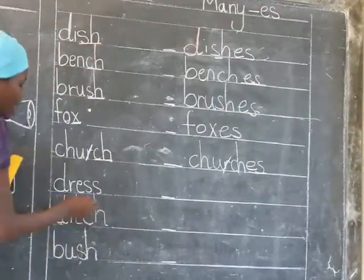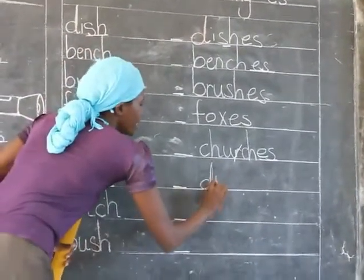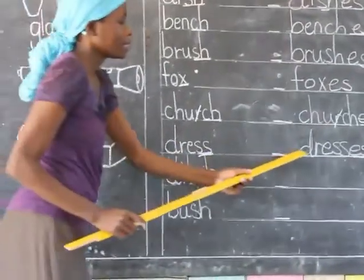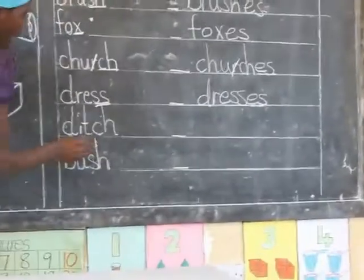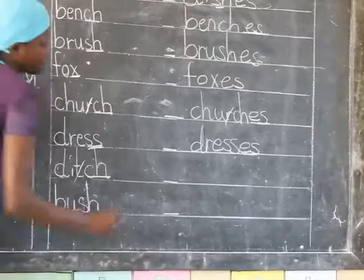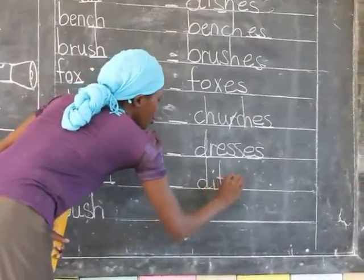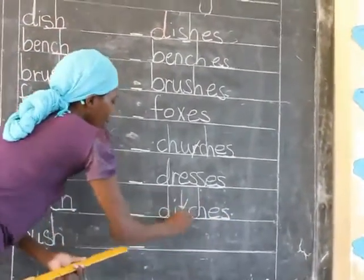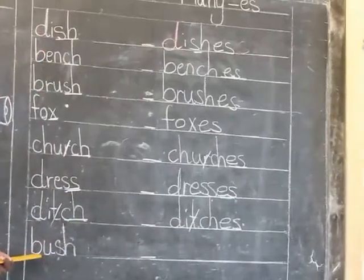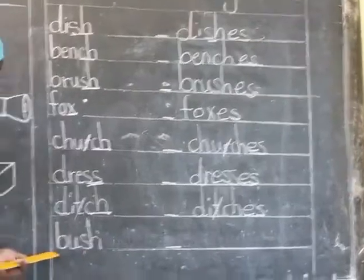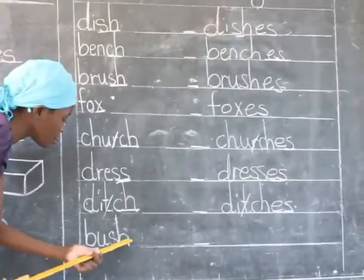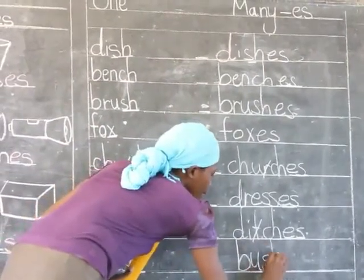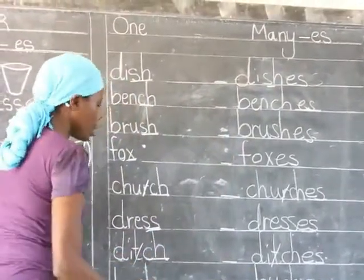I have dress — double S. So I'm going to write dress as it is, add E and S — it's going to be dresses. Dress, dresses. I have here ditch. It is ending with CH. Write ditch as it is, add E and S — I'm going to read ditch, ditches. Finally, I have bush. It is ending with SH. Write bush as it is, add E and S — it's going to be bushes. Bush, bushes.